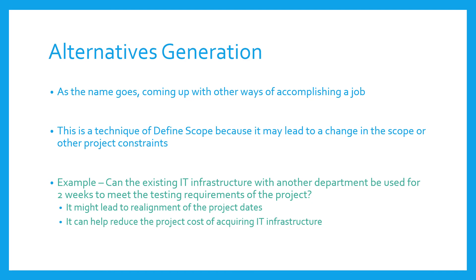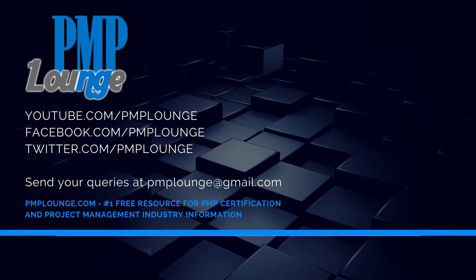In the original project scope you might have included the cost of setting up iOS and macOS environments. But when you apply alternatives generation, you may find you can use an existing environment from another department, reducing project cost. This could also lead to a realignment of project dates based on when the other department can provide the infrastructure. Those were the three tools and techniques of the Define Scope process. Subscribe to this YouTube channel, check us out on Facebook and Twitter at pmplounge, and visit pmplounge.com — your number one free resource for PMP certification and project management information.